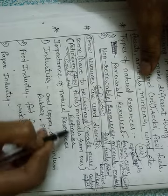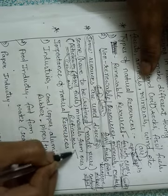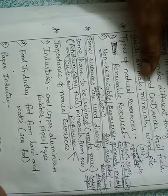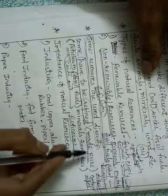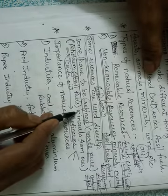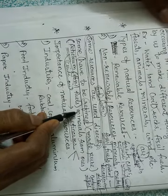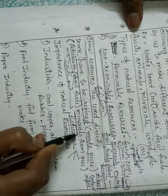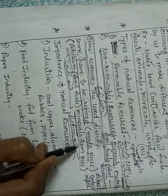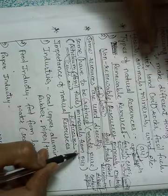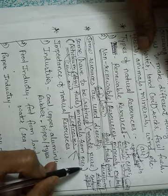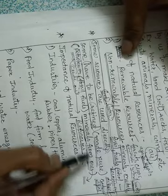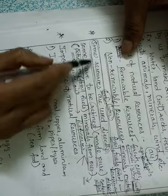In refineries, petroleum is refined or made pure, and different products are made from it like petrol, kerosene, and diesel. Similarly, minerals obtained from inside the earth exist as ores mixed with rocks. These rocks are dug out, taken to refineries, made pure, and then metals are extracted from them.